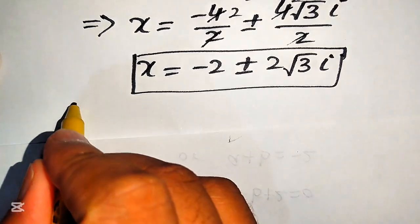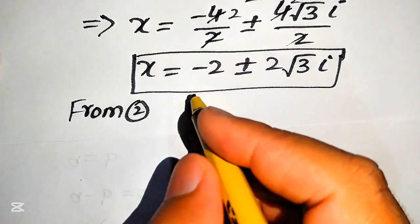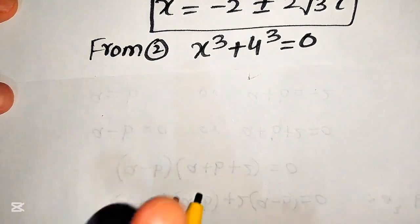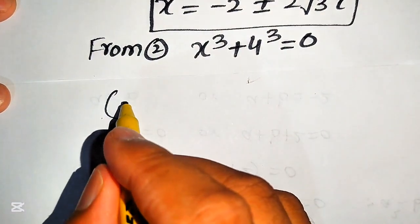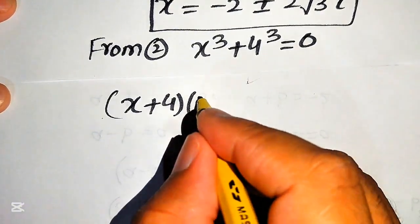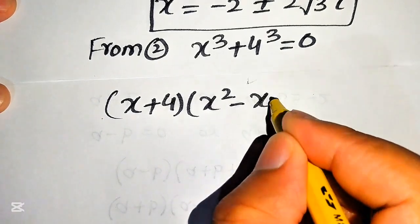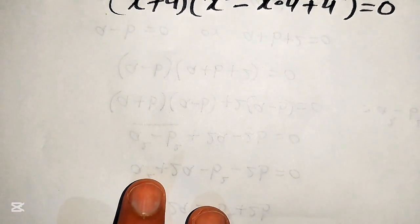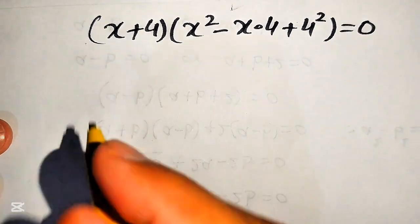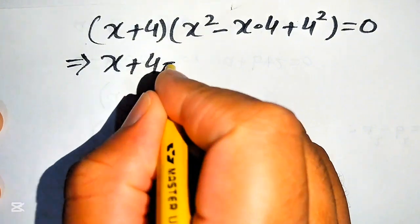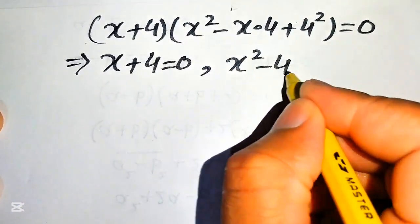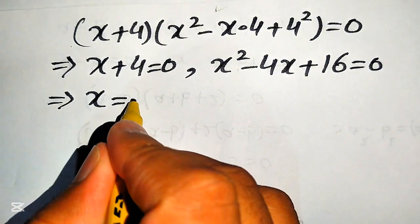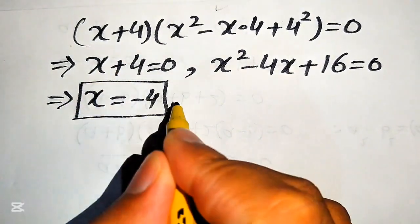Now we focus on equation number 2: x cubed plus 4 cubed equals to 0. We apply the sum of cubes formula: a cubed plus b cubed equals a plus b times of a squared minus ab plus b squared. Dividing into two cases: first case x plus 4 equals to 0, second case x squared minus 4x plus 16 equals to 0. From the first case we get x equals to minus 4, which is the fourth root of the given equation.